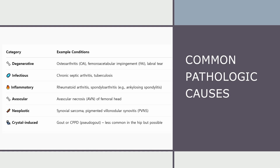Infection, including chronic septic arthritis or tuberculosis. Inflammatory disease, such as rheumatoid arthritis or axial spondyloarthritis. Avascular necrosis of the femoral head. Neoplastic conditions, like pigmented villonodular synovitis or even synovial sarcoma. Crystal arthropathy — less common in the hip, but still possible. These are not minor conditions.